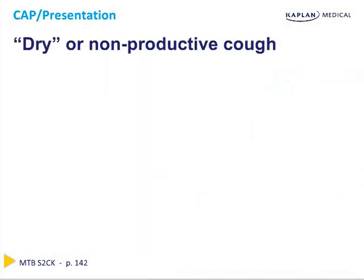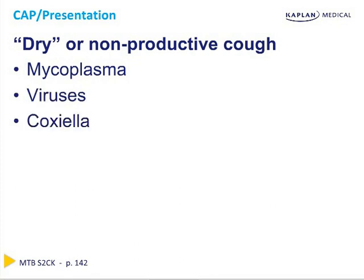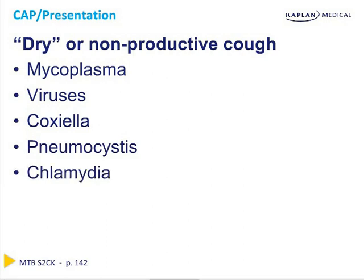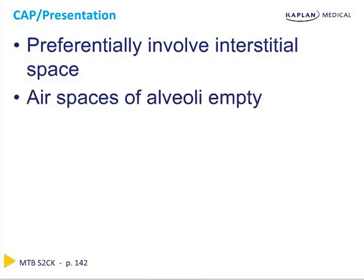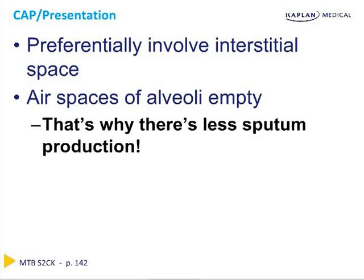In the situation where a patient with pneumonia has primarily a dry or non-productive cough, there are certain bugs you should think about: mycoplasma, viruses, Coxiella, Pneumocystis, and Chlamydia. The reason is that these bugs preferentially involve the interstitial space in the lung — the air spaces of the alveoli are actually empty and quite healthy in these conditions. In a lobar bacterial pneumonia, the alveoli will be filled with pus and the cough will be productive of discolored sputum, whereas in an interstitial pneumonia, there's much less sputum production because the disease is primarily in the interstitium.